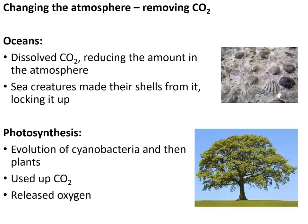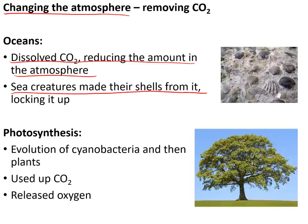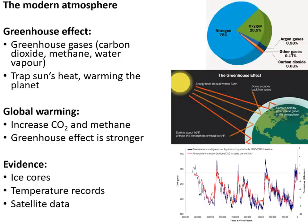The modern atmosphere is very different: much less carbon dioxide and much more oxygen. Over time, carbon dioxide dissolved in the oceans, and sea creatures made shells from calcium carbonate, locking carbon dioxide away. Photosynthesis by cyanobacteria and then plants also used up carbon dioxide and released oxygen. The modern atmosphere is 78% nitrogen, about 21% oxygen, about 1% argon, and trace amounts including carbon dioxide at 0.03% — which is rising quickly.